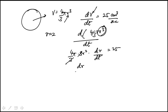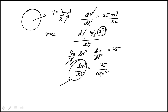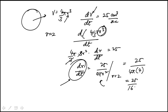This simplifies to dr/dt = 25 over 4πr². We need to compute this rate of change when r is 2. Replacing r with 2, that becomes 25 over 16π, which is answer choice A.